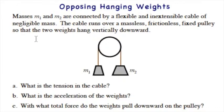So here's our scenario. Masses M1 and M2 are connected by a flexible and inextensible cable of negligible mass. The cable runs over a massless, frictionless fixed pulley so that the two weights hang vertically downward. M1 and M2 aren't specified - they can be anything. The diagram shows M2 being bigger than M1. We'll kind of assume that's true as we go on, but that's not going to be necessary in our setup.